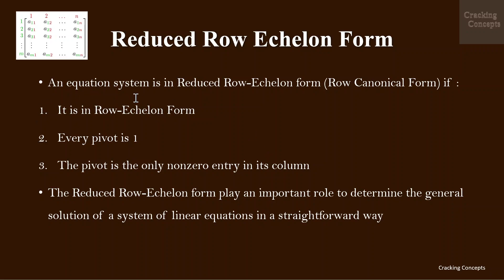An equation system is in reduced row echelon form, or row canonical form, if it is in row echelon form, every pivot is one, and the pivot is the only non-zero entry in its column. The reduced row echelon form plays an important role in determining the general solution for a system of linear equations in a straightforward way.